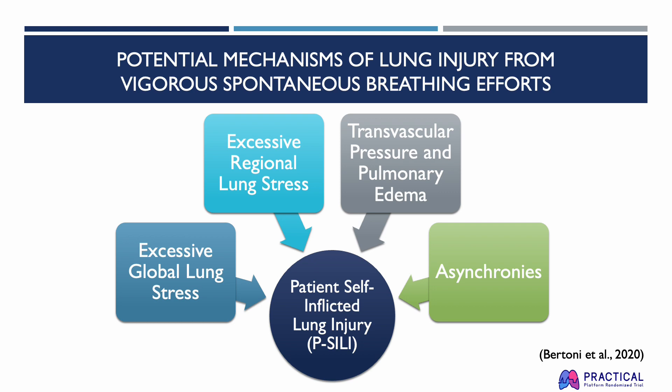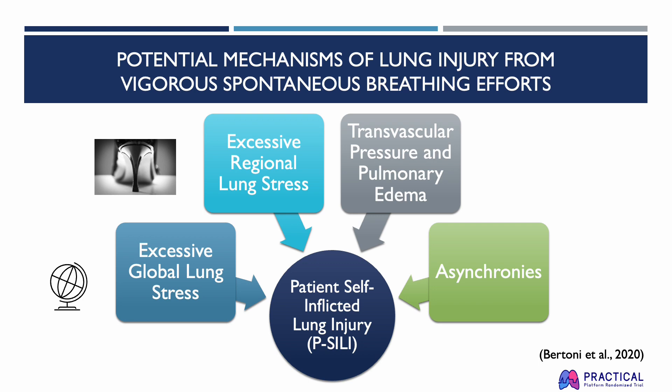There are four potential contributors to patient self-inflicted lung injury during spontaneous breathing. The first is excessive global lung stress, which occurs when patient respiratory efforts increase tidal volume and transpulmonary pressure above safe limits for patient-supported breaths. Next is excessive regional lung stress, which occurs for injured lungs that are collapsed and consolidated, including mechanical stress and strain, which can lead to uneven redistribution of air during inflation, increasing the positive airway pressure.